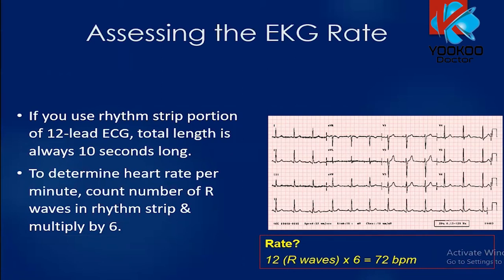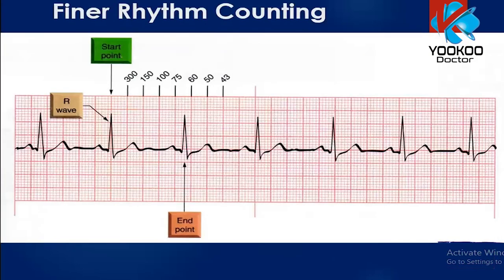Another approach is based on the RR interval distance. Starting from the first R wave to the next R wave, count the number of large squares: one big square equals approximately 300 beats per minute, two big squares is 150, three squares is 100, four squares is 75, and five squares is 60. You can also look at the small squares for more precision. You can divide 300 by the number of big squares, or divide 1500 by the number of small squares between the two RR intervals.